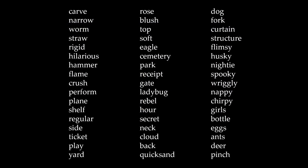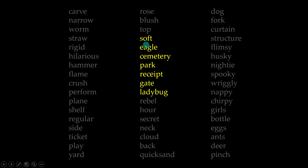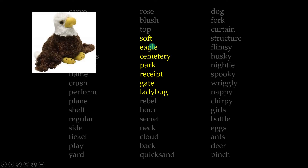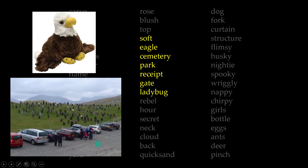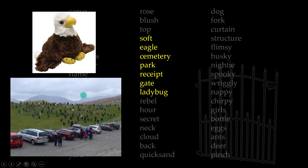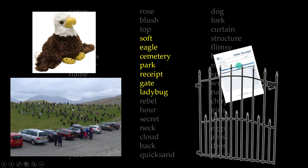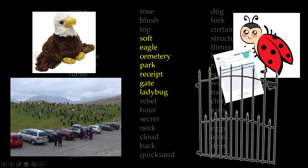Now we go to the third and deepest level of processing, called semantic, which means meaning. We're going to focus on the middle seven words and try to memorize them not based on structural similarities or how they sound, but what they actually mean. So I'm combining the first two words — soft eagle — and I'm seeing in my mind a soft plush stuffed toy eagle. Next, symmetry and park become a car park next to a cemetery. Then a gate with sharp tips has a receipt stabbed onto the top, and a large ladybug is trying to pull that receipt off.